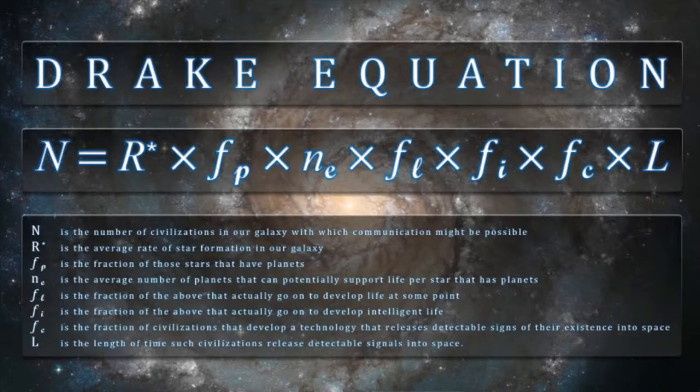The third number is the number of Earth-like systems within each exoplanet system. This is the subject of intense investigation in astrobiology. We don't know the answer, but it's looking like it is 1 or 2 — there are typically a couple of Earth-like planets in each solar system out there. These numbers are all either determined or about to be determined by astronomical observation.